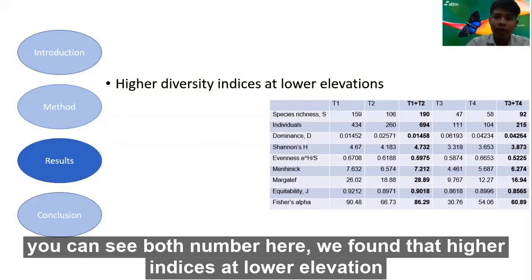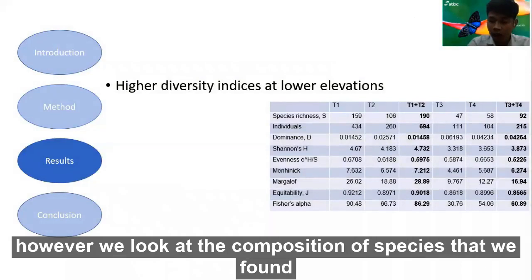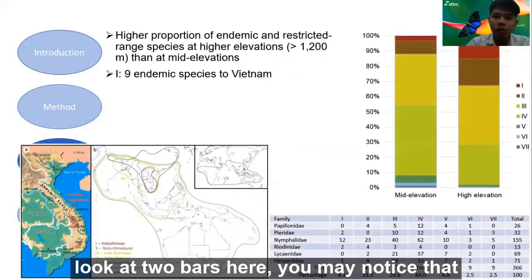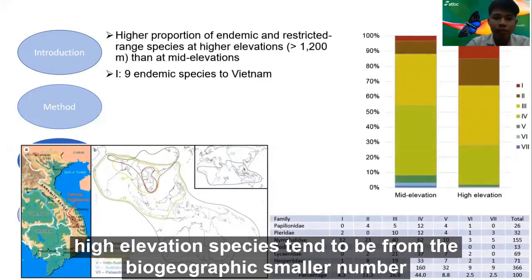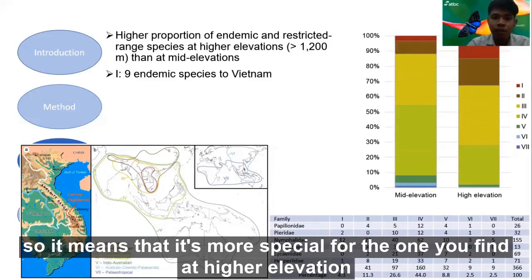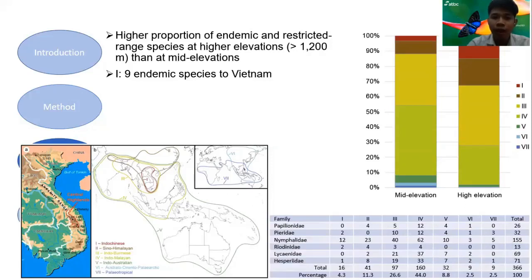We found higher diversity indices at lower elevation. However, looking at the composition of species found, higher elevation species tend to belong to smaller biogeographic categories, meaning that butterflies at high elevation tend to have smaller overall species distributions. So the species you find at higher elevation are more specialized.